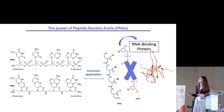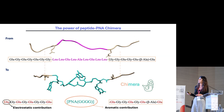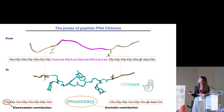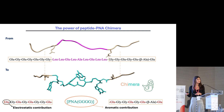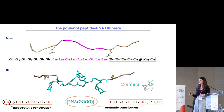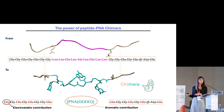We started from the peptide that lacked the aromatic contribution, maintained the two termini of the chain to preserve the electrostatic contribution that we confirmed as essential for the interaction, and replaced the central part of the peptide with four PNA building blocks to introduce the aromatic contribution — mimicking the two contributions that drive the interaction between the protein and the viral RNA. This gave us a chimeric molecule.